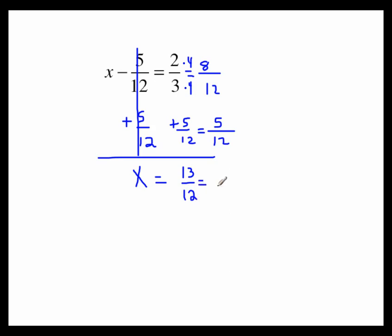However, you may be instructed to change that to a mixed number. So to change to a mixed number, remember to divide. 12 goes into 13 one time with a remainder of 1 over that same denominator of 12. Those are equivalent answers.